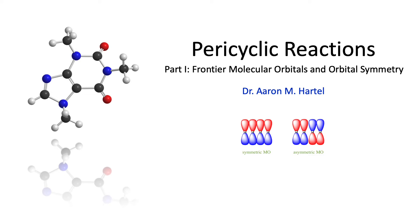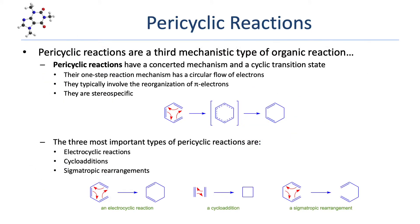In this lesson, we cover some fundamental concepts related to the study of pericyclic reactions, including frontier molecular orbital theory and orbital symmetry. Pericyclic reactions are a third important mechanistic type of organic reaction, the other major types being polar reactions and radical reactions. Pericyclic reactions are distinct from other reactions in that they have a concerted mechanism and a cyclic transition state. This means that pericyclic reactions have a one-step mechanism with a circular flow of electrons and typically involve reorganization of pi electrons.